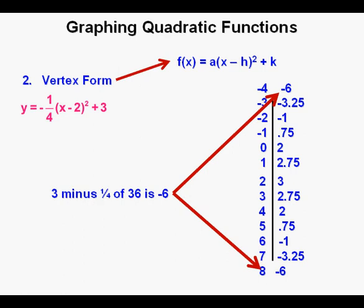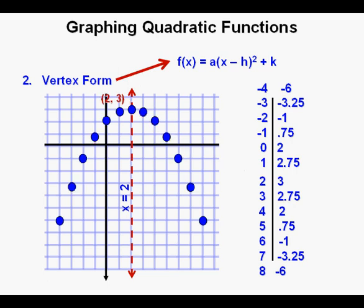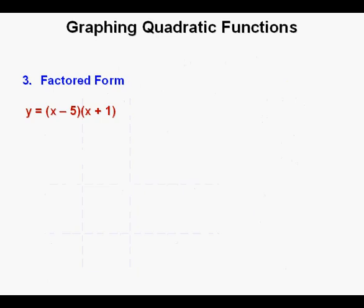We'll do one more: 3 minus one-fourth of 36 is 3 minus 9, which equals negative 6. Now we'll get a coordinate grid to plot our points. Our axis of symmetry is at x equals 2. We plot our vertex, which is a maximum at (2, 3), then draw in the remaining points and the curve through them. We see a wider parabola than the standard one from the previous example that used 1 as the leading coefficient.